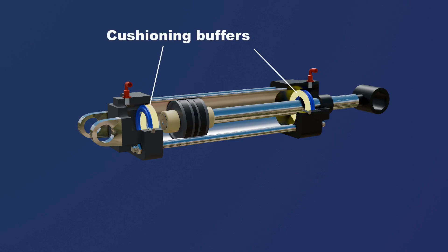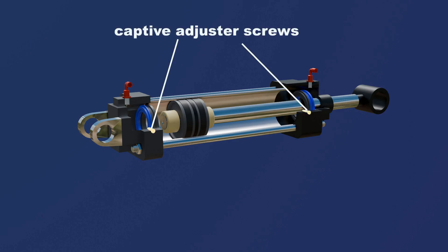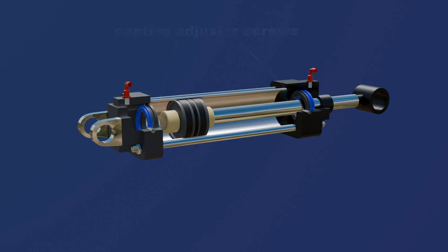These buffers absorb the kinetic energy, reducing the impact force and minimizing noise, which is especially important in maintaining a quiet and smooth operation. Each end of the cylinder has screws that can be turned to adjust the cushioning, helping make the cylinder's movement smoother at the ends.